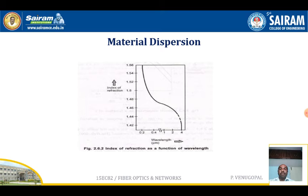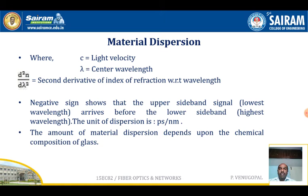Observing the graph, the index of refraction varies with changes in wavelength in micrometers. Here, c is the speed of light, lambda is the center wavelength, and d²n/dlambda² is the second derivative of the refractive index with respect to wavelength. The negative sign indicates that the upper sideband (lowest wavelength) arrives before the lower sideband (highest wavelength). The unit of dispersion is picoseconds per nanometer, and the amount of material dispersion depends on the chemical composition of the glass.